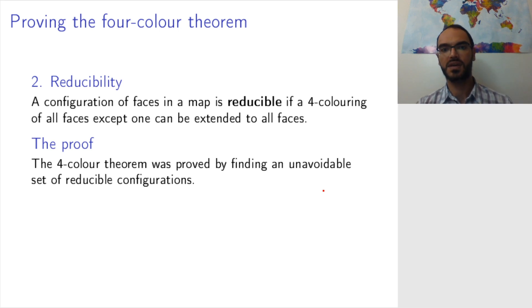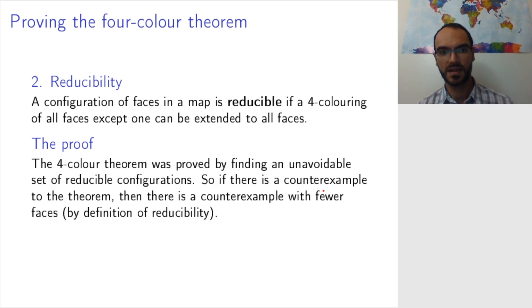If such a set exists, then if there is a counterexample to the theorem, if there is a map that is not four colorable, then it will have one of these reducible configurations somewhere in it.